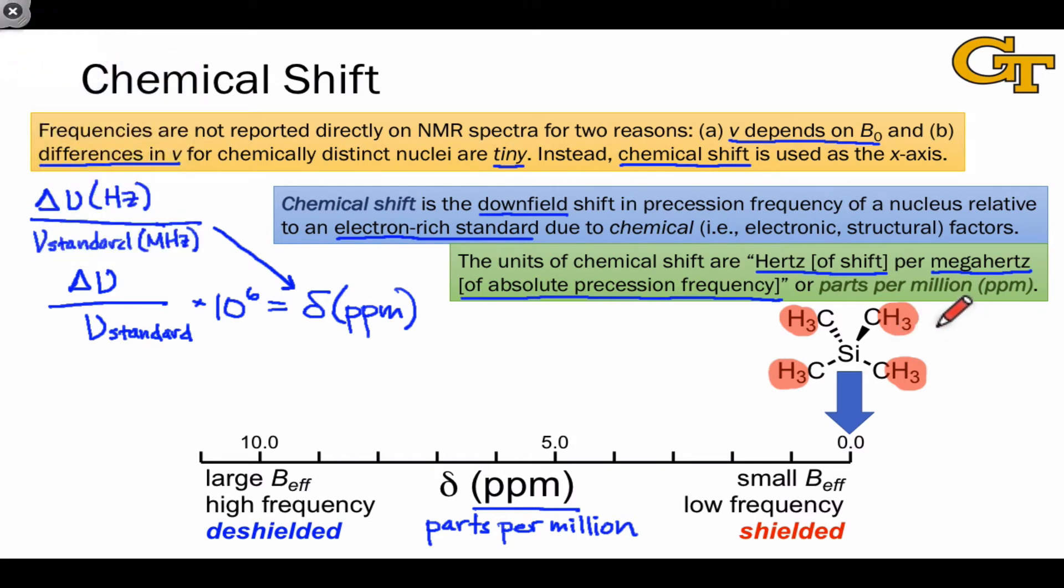This molecule is called tetramethylsilane, or more commonly TMS, and it's the typical standard at 0.0 ppm for proton NMR. Other signals are reported as chemical shift relative to TMS.